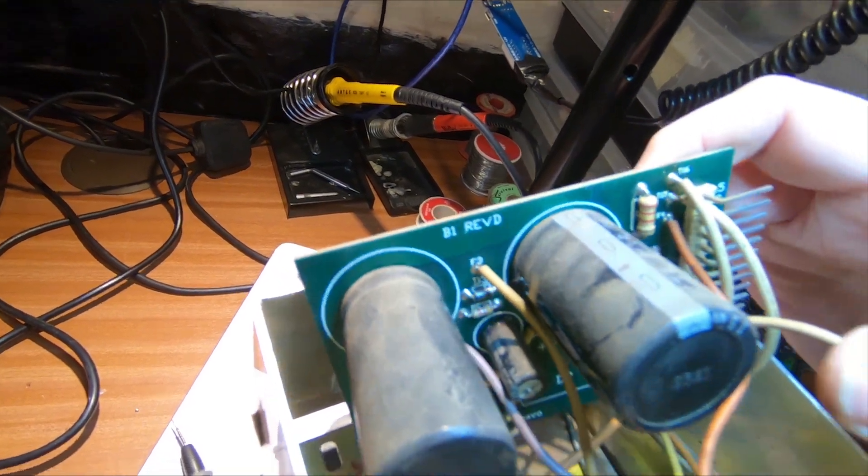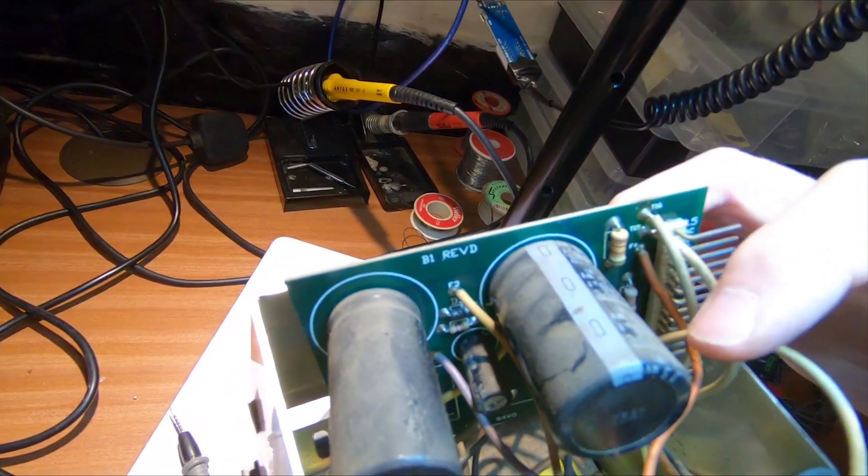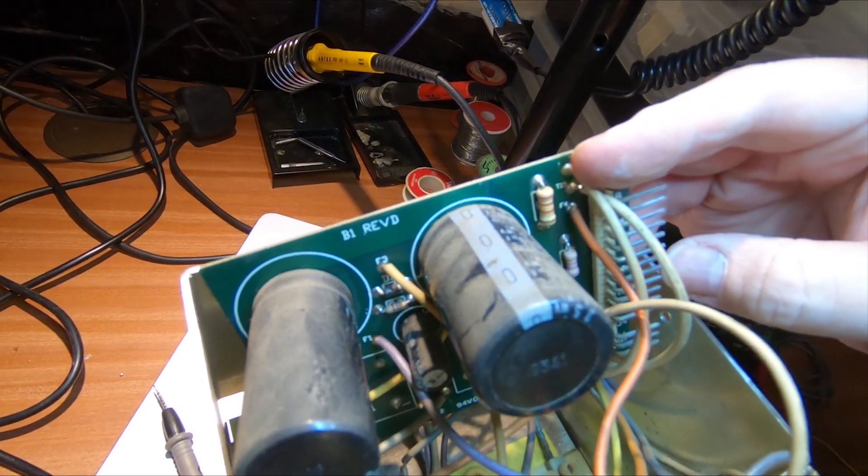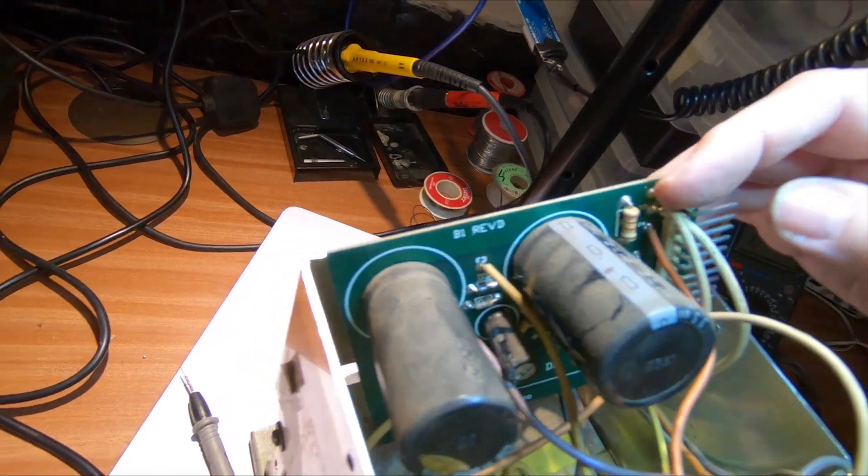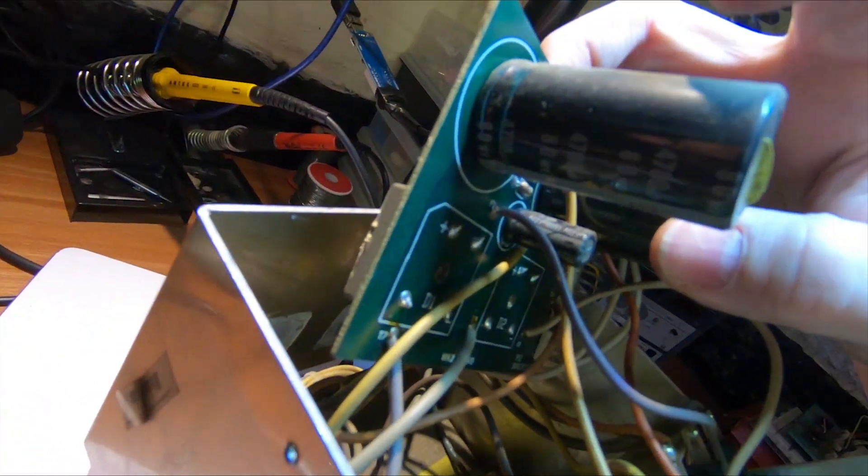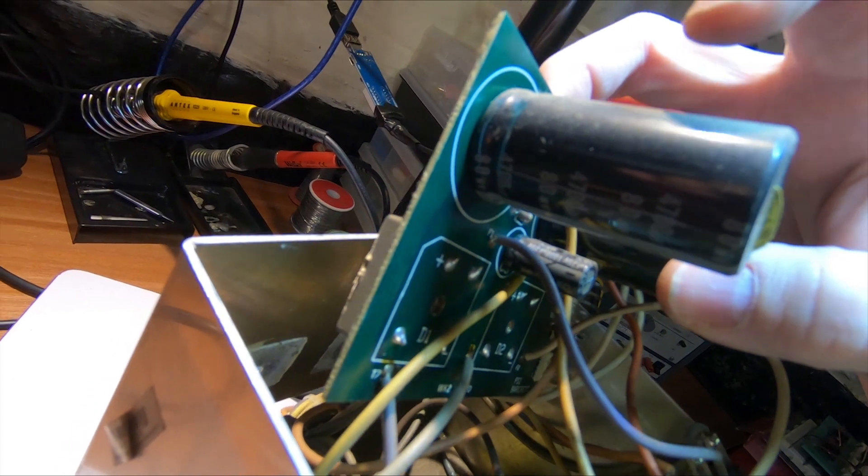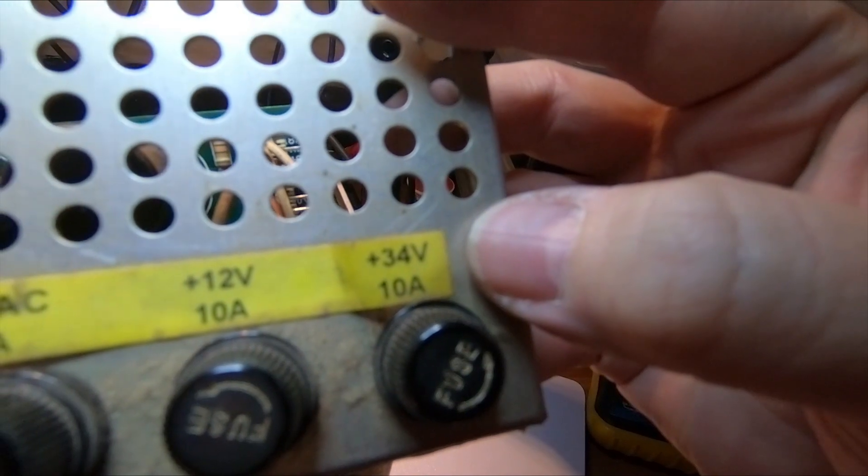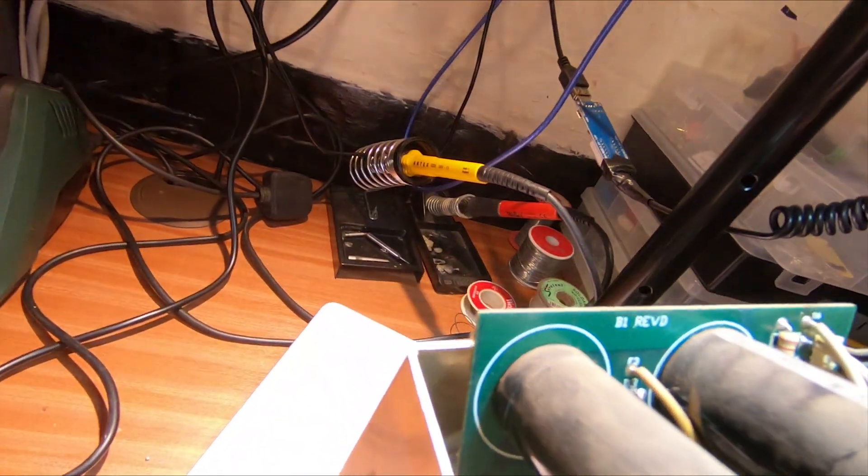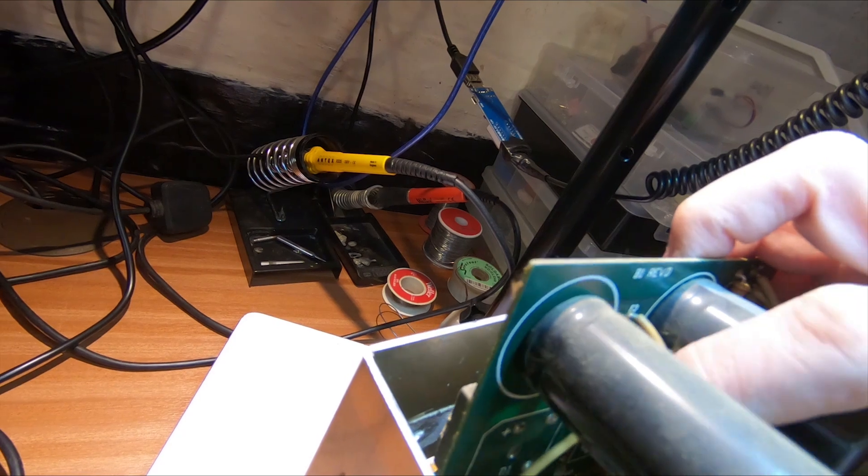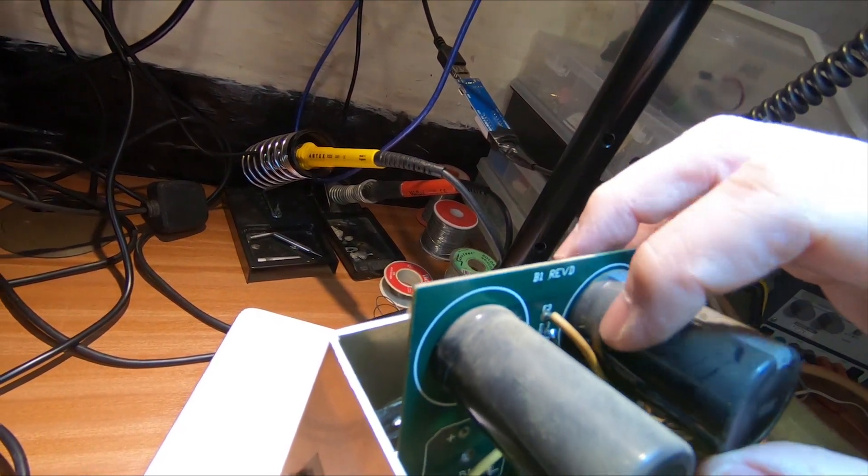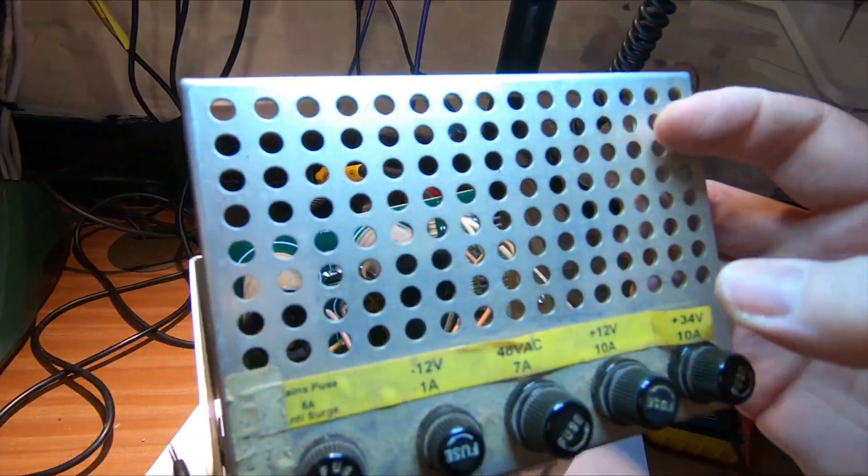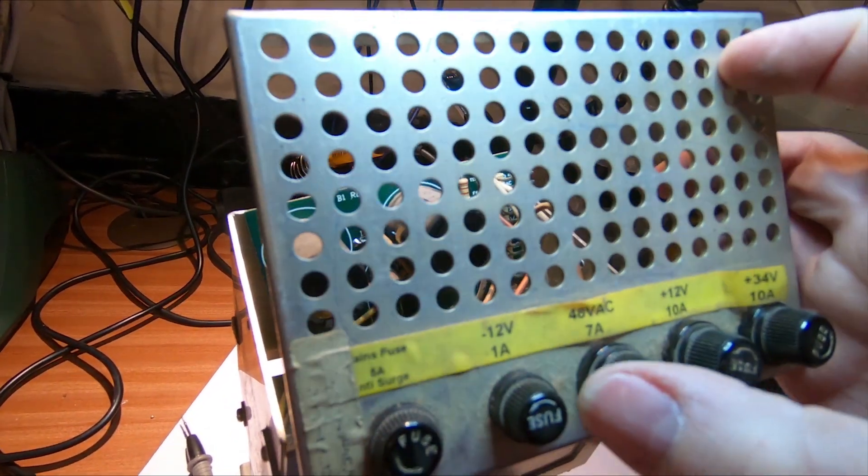The voltages on these: the 35 volt 15,000 microfarad goes to the 12 volt DC output, the 4700 microfarad 80 volt is for the plus 34 volts DC rail, and the last one which is also a 4700 microfarad 16 volt capacitor is for the minus 12 volt rail.